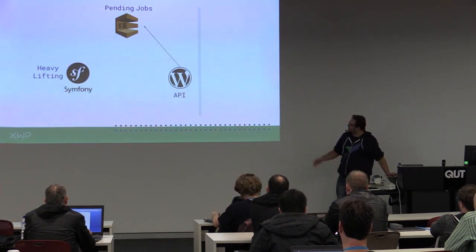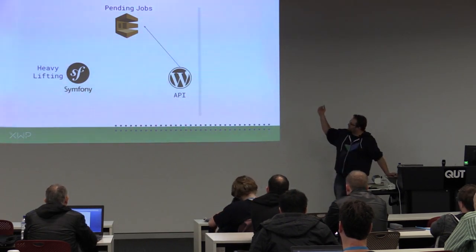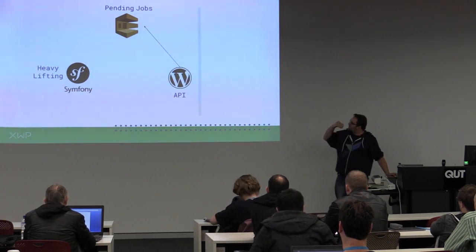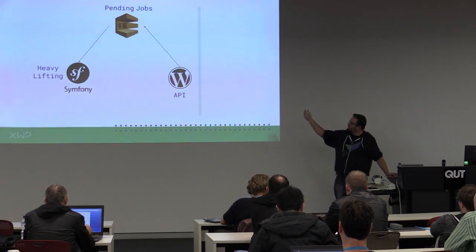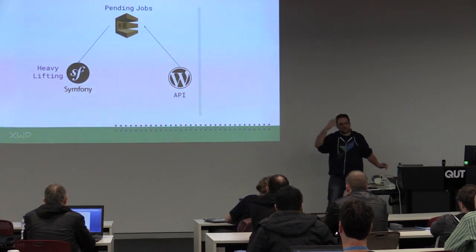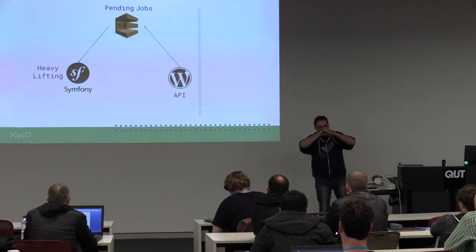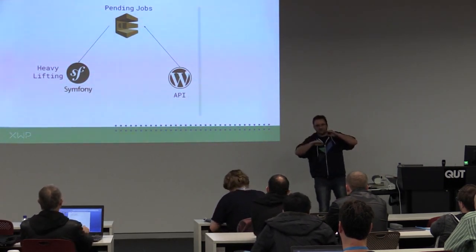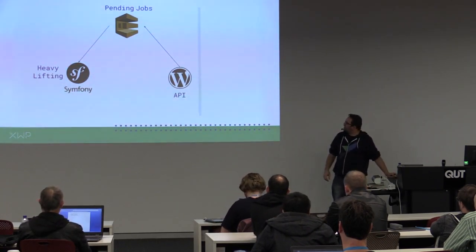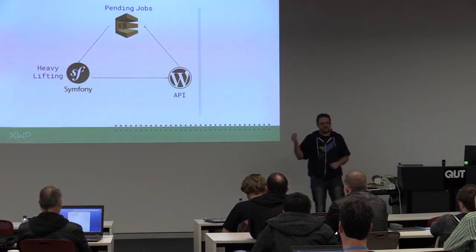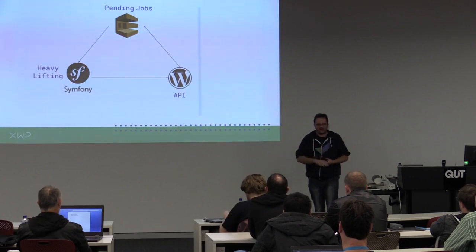To make the connection clear: we have incoming requests, the jobs get sent to SQS, Symfony pulls those jobs from SQS, and as a job comes in it gets dropped off the queue. We start doing the processing, and then we have that data being written back to the API.